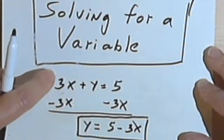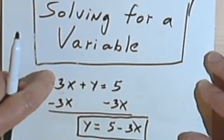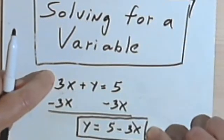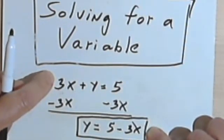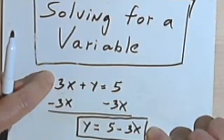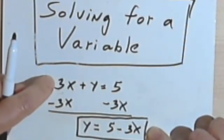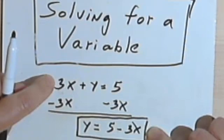Now it's important to realize that this original equation, 3x plus y equals 5, and the one I just came up with, y equals 5 minus 3x, really give the same information. They're both the same equation, just in a different form.